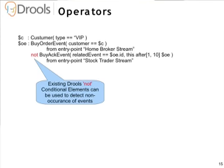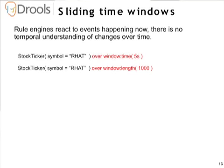We've extended our patterns with what we call behaviours. Using the 'over' behaviour, we can look at a stream of events over a period of time or a count — for example over five seconds or a count of a thousand. We can combine that with the accumulate keyword so I can say: when the Red Hat stock symbol over a period of five seconds has an average of more than a hundred. Importantly, this is a sliding time window, not a batch or tumbling time window, constantly monitoring. Patterns can also look at the time window over an entry point.